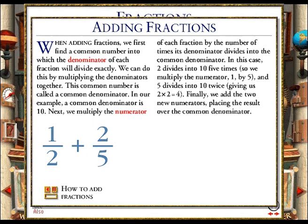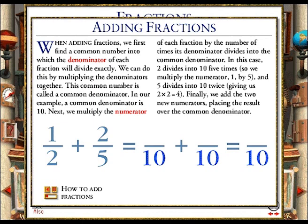To add 1 over 2 and 2 over 5, we start by finding a common number on the bottom that is divisible by both 2 and 5. In this example, we can simply multiply the 2 by the 5 to get a common number of 10. We must now express each of the original fractions, 1 over 2 and 2 over 5, as fractions with bottom number 10. We do this by multiplying the top number of each fraction by the number of times its original bottom number divides into the common number. 2 divides into 10 five times, giving us 5 times 1, which is 5. 5 divides into 10 twice, giving us 2 times 2, which is 4. We then add the 5 and 4 together to get 9 and place this over our common number of 10 to get our answer of 9 over 10.